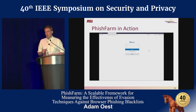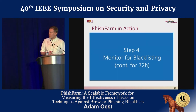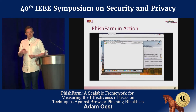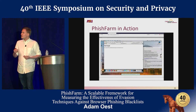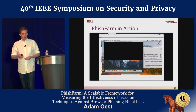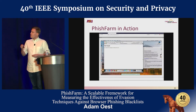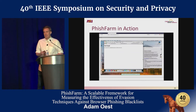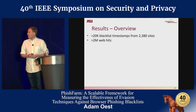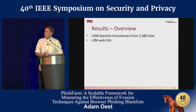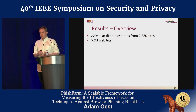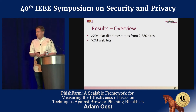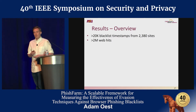We had a total of over 2,000 blacklist timestamps from all of these sites. After sites have been reported, we're running a monitoring system in the back end looking through all the browsers and checking for blacklist warning messages. We ran this for about 72 hours, and after this we had a treasure trove of data which we could then analyze to understand the ecosystem. At the end of the deployment, we had over 20,000 blacklist timestamps and over 2 million web hits from the crawling infrastructure — a very large volume of activity from the security crawlers.